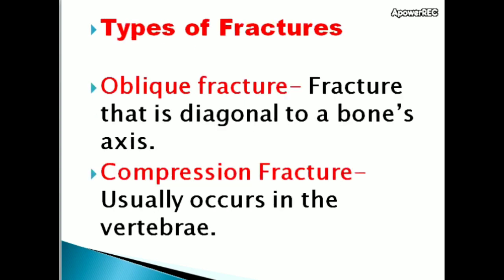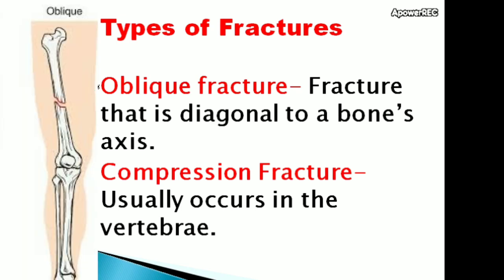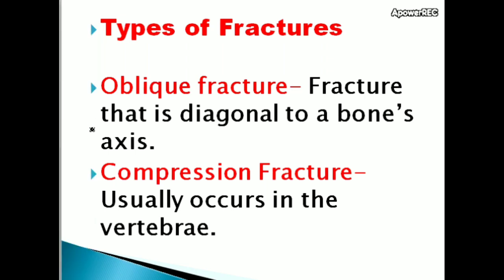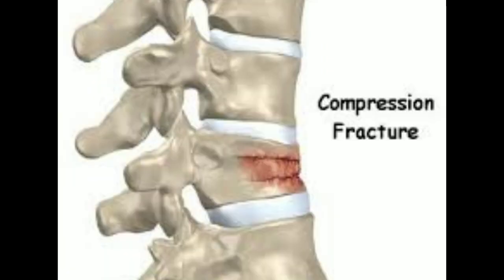Types of fracture: Oblique fracture — a fracture that is diagonal to a bone's axis. Compression fracture usually occurs in the vertebra; it occurs due to the action of compressing, usually in the thoracic spine region, which is the middle portion of the spine.